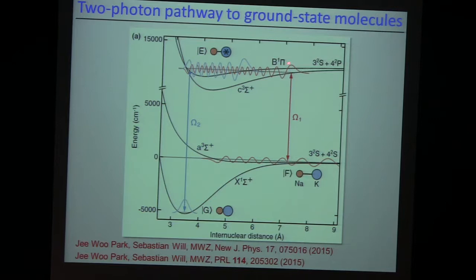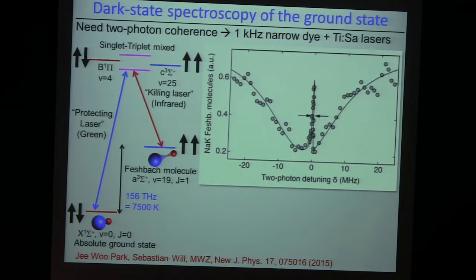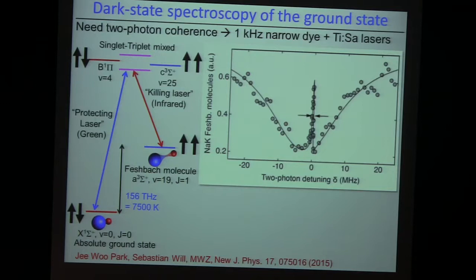There is an intermediate state which has wave function overlap with both the initial state and the final state, and the two-photon transition drives the atoms into the ground state. We need very special states to work with — those that actually mix the singlet and triplet states. But we found those magic states. There was a coupling which allowed us beautiful coupling of this intermediate state with both the Feshbach molecular state and the absolute ground state. This picture for the experts shows that it works.